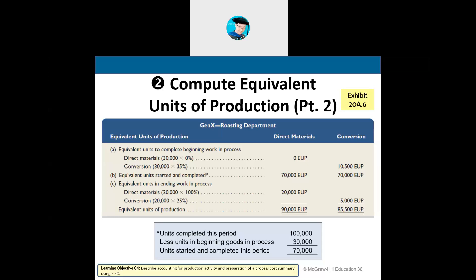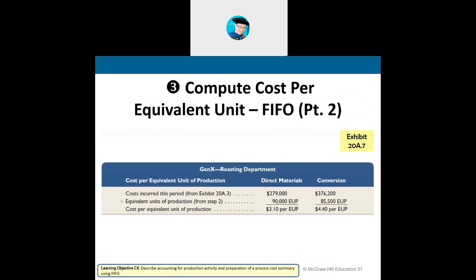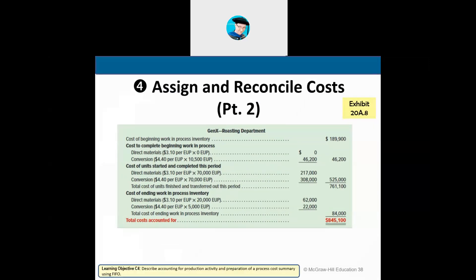Step one: determine the physical flow of units — same as before. Work in process beginning plus units started equals 120,000 total, reconciled against units transferred out plus ending work in process. Step two: compute equivalent units of production. For direct materials: 30,000 times 0% — no additional direct materials to add for beginning inventory — so 0. Conversion cost: 30,000 at 35% equals 10,500. Units started and completed during the month: 70,000. Ending work in process: direct materials 20,000 at 100% equals 20,000; conversion cost 20,000 times 25% equals 5,000. Step three: cost per equivalent unit — cost incurred divided by total units of production equals $3.10 for direct materials and $4.40 for conversion cost.